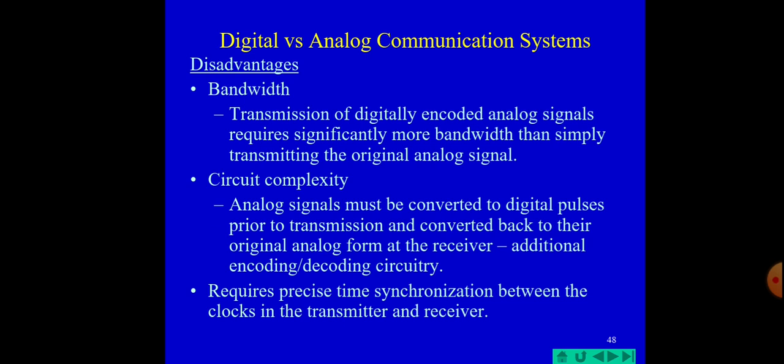The disadvantages of digital communication include the fact that analog signals require significantly more bandwidth when converted to digital for transmission. Analog signals must be converted to digital pulses prior to transmission and converted back to their original analog form at the receiver. Additional encoding and decoding circuits are required. It also requires precise time synchronization between the clocks in the transmitter and receiver.